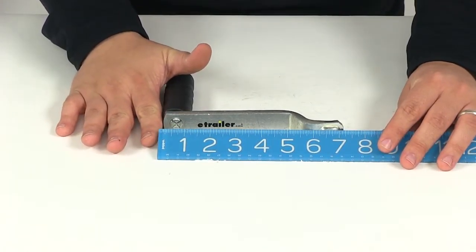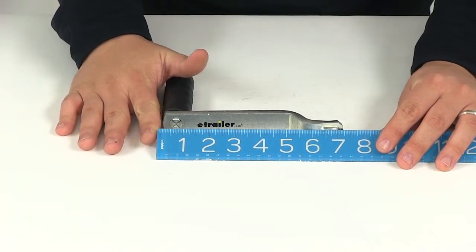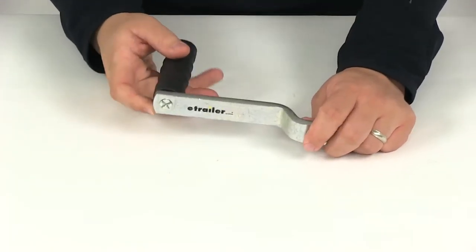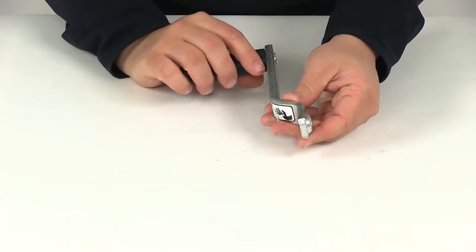Overall length measuring edge to edge, it's going to be about seven and one quarter of an inch. The offset is a nice little feature to have. It's going to help clear other accessories or obstacles on the trailer.